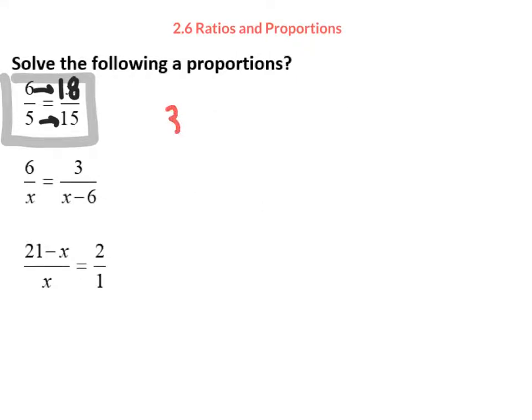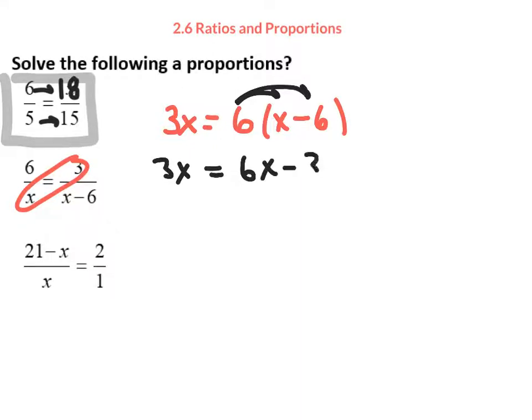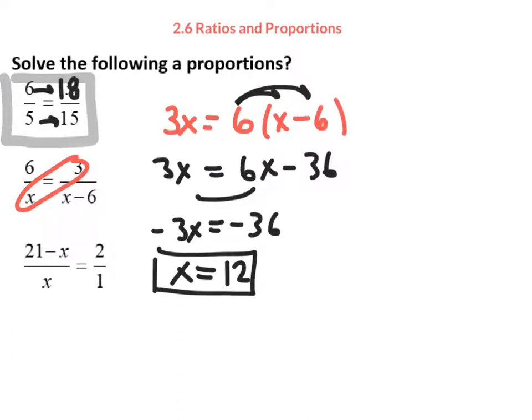In the second one, we would do 3 times x going this way, and we would do 6 times x minus 6. The key to this one is that you would distribute this into this position. So we get 3x equals 6x minus 36. Let's move this to the other side. We get minus 3x equals minus 36, and x equals 12. Now again, testing this could work out nicely. If you put in a 12 here, basically you're doing 6 over 12, which is a half.